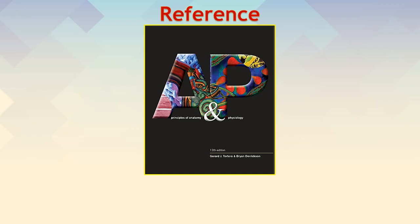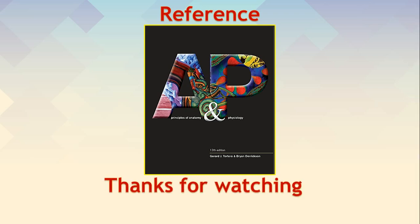So this concludes the discussion of the diencephalon, which comprises three parts: the thalamus, hypothalamus, and epithalamus. It comprises a number of nuclei which mainly form relay stations between areas within the CNS. Thank you for watching.